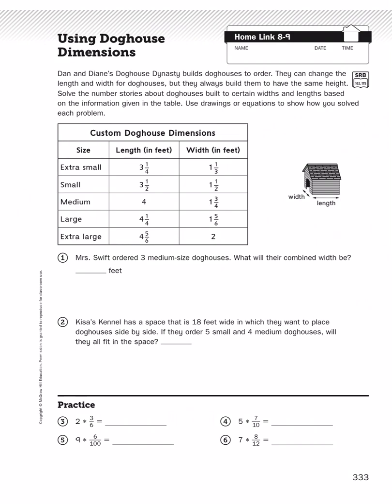Let's read the number story premise to get started. Dan and Diane's Doghouse Dynasty builds doghouses to order — that's a bit of alliteration. They can change the length and width for doghouses, but they always build them to have the same height. Solve the number stories about doghouses built to certain widths and lengths based on the information given in the table. Use drawings or equations to show how you solved each problem. These problems are area-adjacent, but they really don't deal with area. There are only two number story problems here, so I'll make you a deal — I'll do one for you, and then you do one on your own.